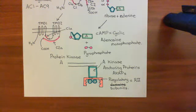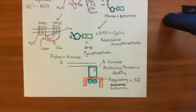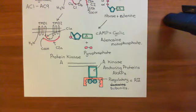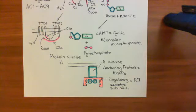Welcome to this next video in which we are discussing gastric acid secretions. We're currently looking at the pathway downstream of the H2 receptor, and we've got to the point where the adenylyl cyclase enzymes have produced cyclic AMP, and we want to see the targets of cyclic AMP within the cell.